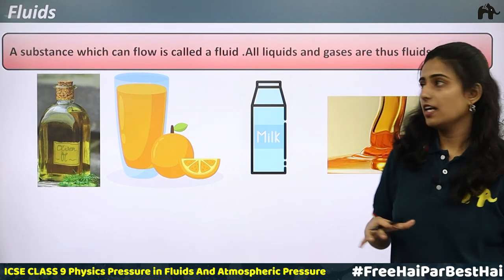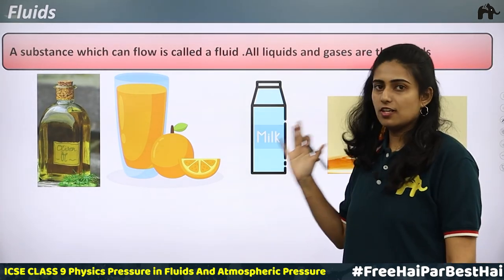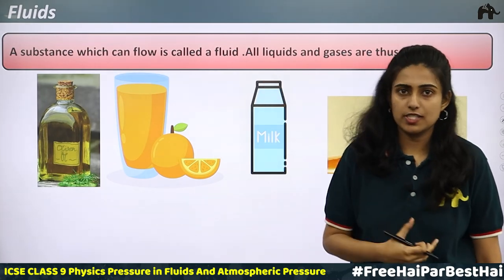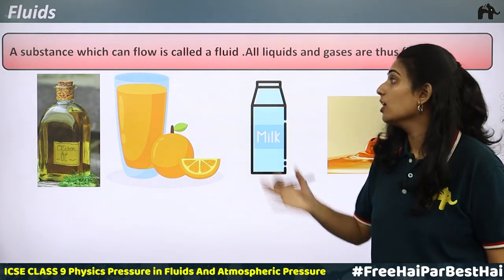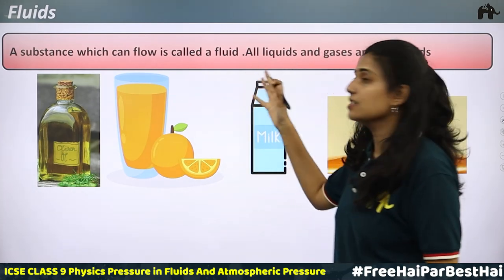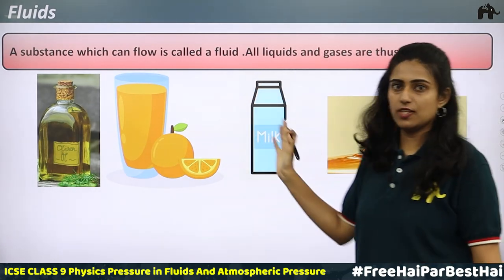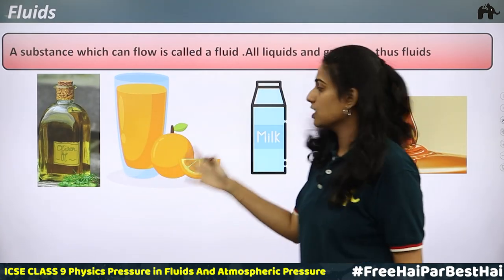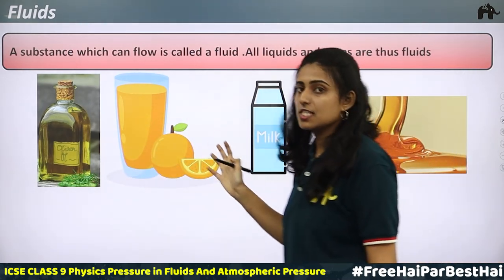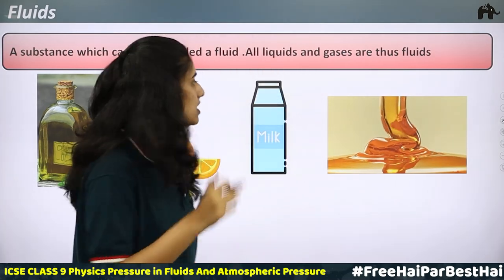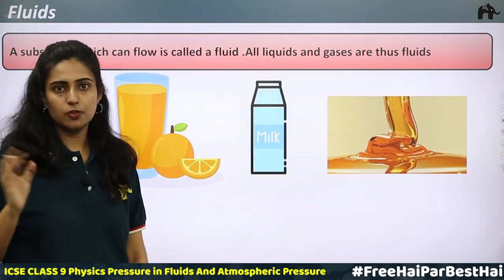We have studied pressure in solids. Now let us take the case of fluids. Fluids are substances that can flow. All liquids and gases are fluids — for example, oil, juice, milk, and honey can all flow. Therefore they are known as fluids.